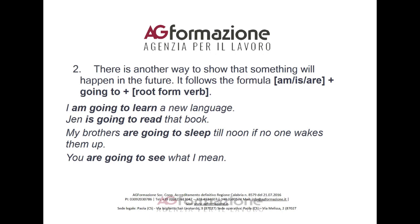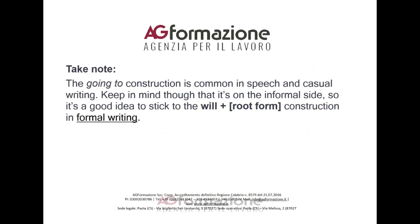Form 2: There is another way to show that something will happen in the future. It follows the formula: am/is/are plus 'going to' plus root form of the verb. For example: I am going to learn a new language. Jen is going to read that book. My brothers are going to sleep till noon if no one wakes them up. Take note: the 'going to' construction is common in speech and casual writing, but it's on the informal side, so stick to 'will' plus root form in formal writing.